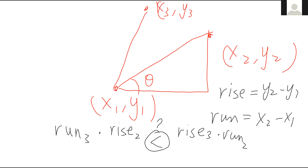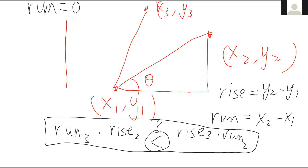When does slope fail? Slope fails when you have a vertical line — rise is nonzero but run is zero, which normally causes a divide-by-zero. But the cross-multiplication formula actually works even for vertical or horizontal lines, making it a much better way to compare and sort by slope or angle. You should use this approach instead of computing actual angles.